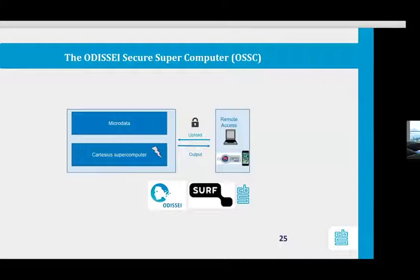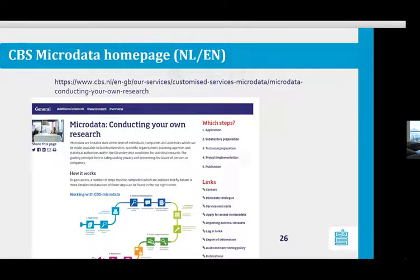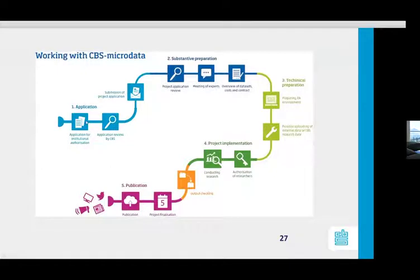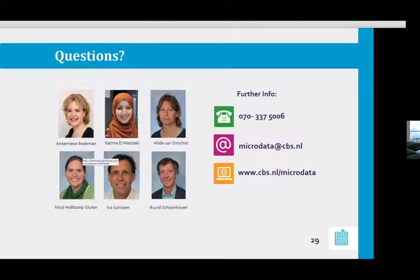For bigger datasets that need a supercomputer, this can be made available by SERV. Because we don't have time to go through all datasets we offer, I refer you to our website where you can find our catalog and other datasets, as well as practical information about how to start your project — including this workflow explaining how to apply for authorization of your institution, prepare your project, and then do output checking and publishing results. Some interesting publications already done within the remote access environment are listed there, and you can find projects already started on our website. If you have questions, please put them in the chat box.